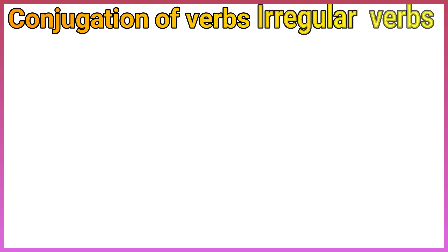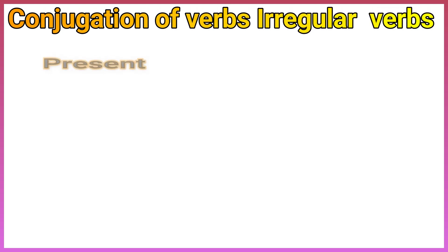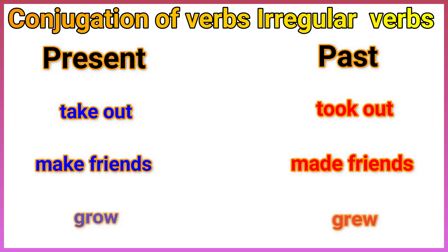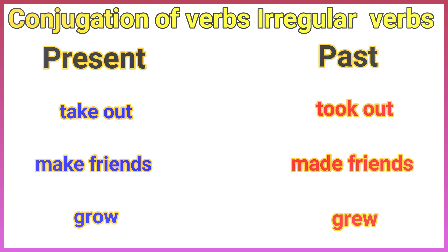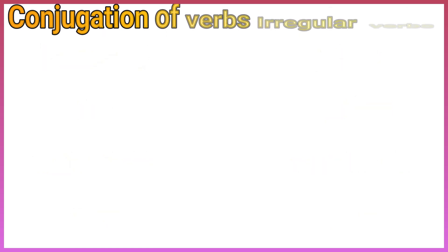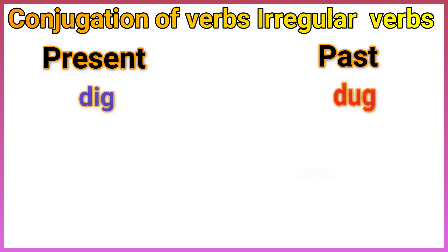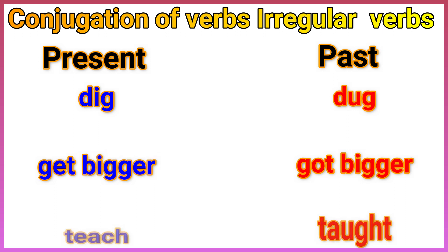Irregular verbs — present and past: take out / took out, make friends / made friends, grow / grew, dig / dug, get bigger / got bigger, teach / taught.